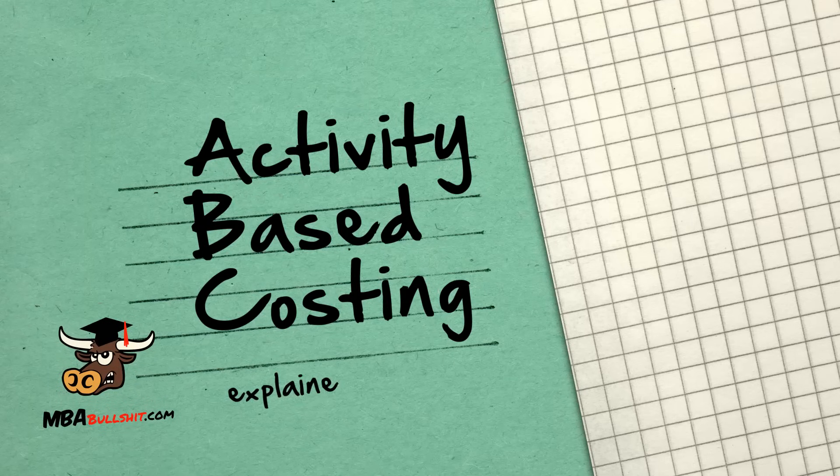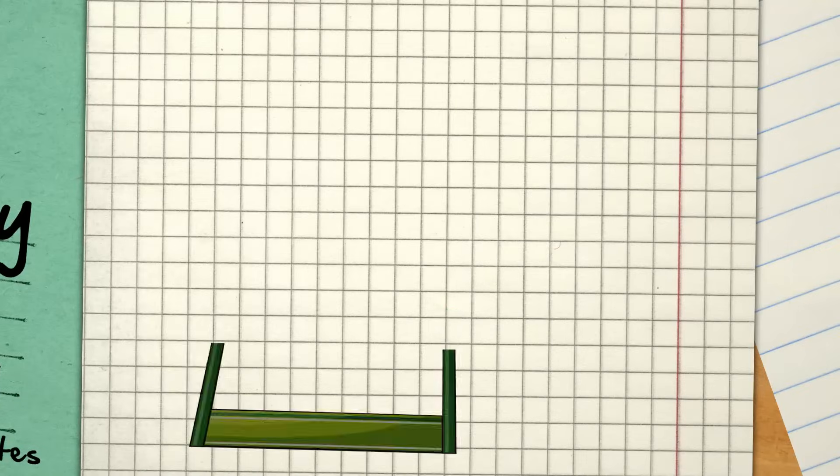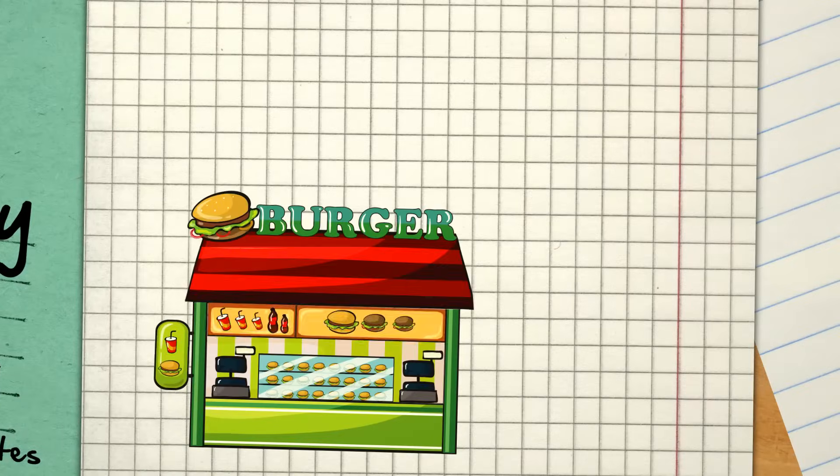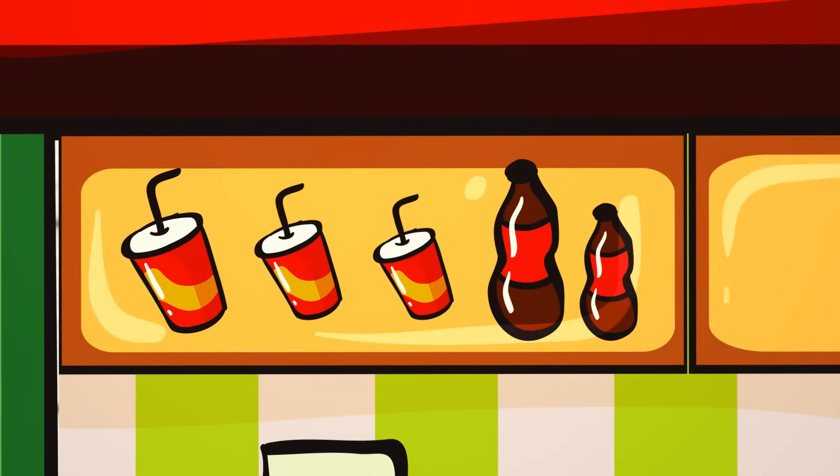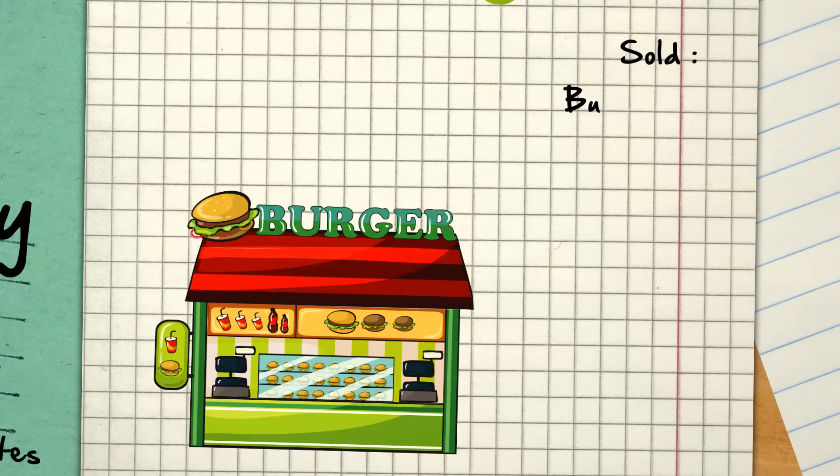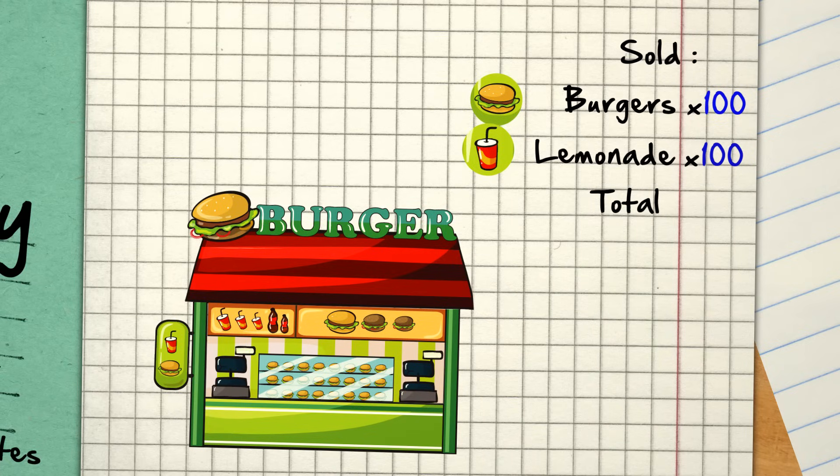Activity-Based Costing Explained in 3 Minutes. Imagine you have a small takeout joint selling burgers and lemonades. This month you sell 100 burgers and 100 lemonades for a total of 200 items.